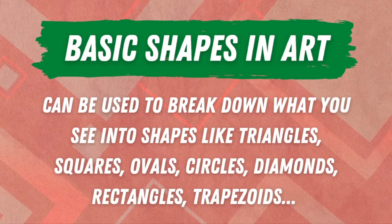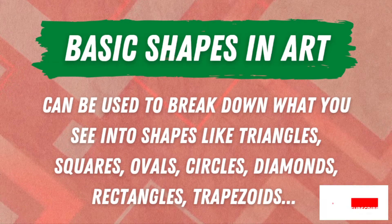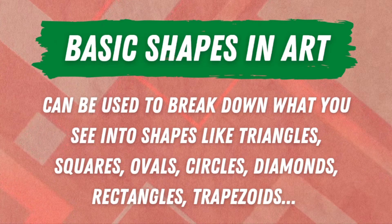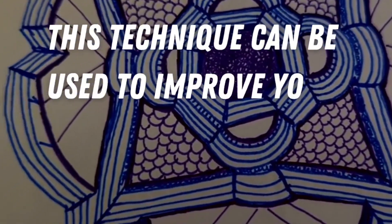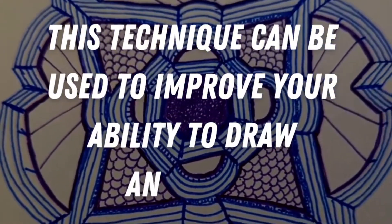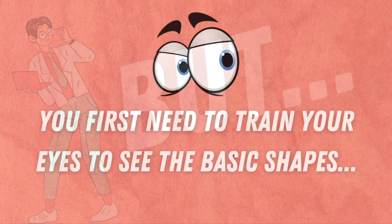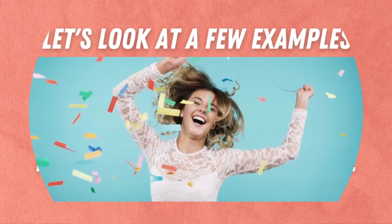How to draw using basic shapes. Basic shapes in art can be used to break down what you see into shapes like triangles, squares, and more. This is a technique that can be used to improve your ability to draw anything, but you first need to train your eyes to see basic shapes.